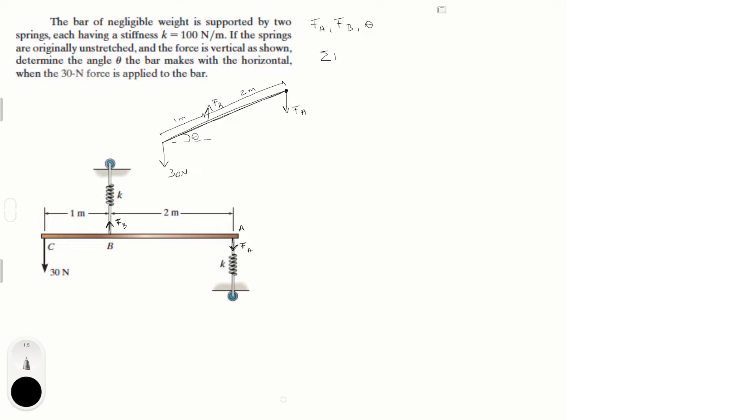So sum of the moments at A assuming counterclockwise is positive equals zero, and is equal to the moment created by F_B, which is F_B times the distance from here to A. That distance, remember this is also theta, is given by 2 cosine of theta. Why 2 cosine of theta? Because this is 2, this is theta, so that distance is given by 2 cosine of theta. This is basic trigonometry, and it's trying to turn it clockwise so it's negative.